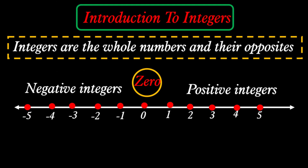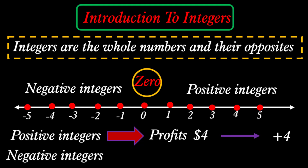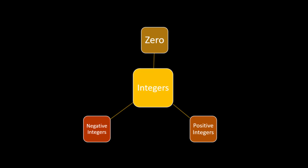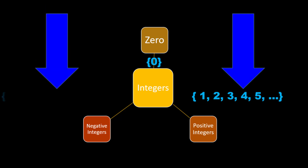Negative integers are negative 1, negative 2, negative 3, negative 4, negative 5. For example, if we have a profit of four dollars, it means positive four. But if we have a loss of four dollars, it means negative four. We can divide the integers into three sets: the zero set, the positive integers — 1, 2, 3, 4, 5 and so on — and the negative integers.